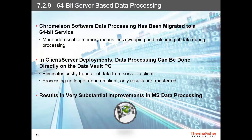Chromeleon 7.2.9 has implemented 64-bit data processing. This relates directly to performance, because more addressable memory means less swapping and reloading of data during processing, and this means Chromeleon will operate faster on 64-bit computers. This service will automatically be installed by the setup kit when a 64-bit operating system is detected during installation. In client-server deployments, data processing can now be performed directly on the Data Vault PC. Previously, Chromeleon sent data from the client to the server for storage, then sent it back to the client for processing. Now the processing is performed on the server, and only the results are sent back to the client. This results in very substantial improvements in mass spec data processing — up to six-times improvements have been seen in some problematic sequences.